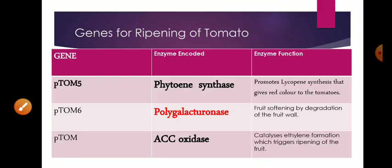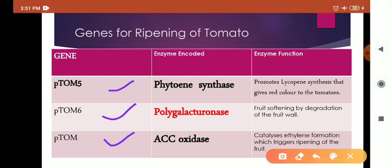Scientists have studied various genes for the ripening of tomatoes. The three most important genes responsible for ripening of tomatoes are pTOM5, pTOM6, and pTOM. As we all know, genes are responsible for formation of mRNA and they in turn form proteins. These proteins are the enzymes and these enzyme function various activities and result in the manifestation of the work.